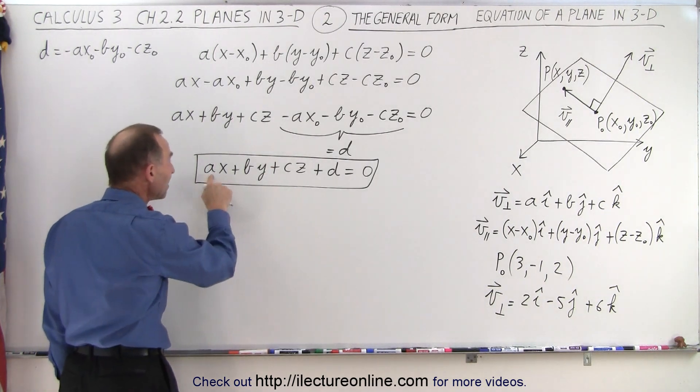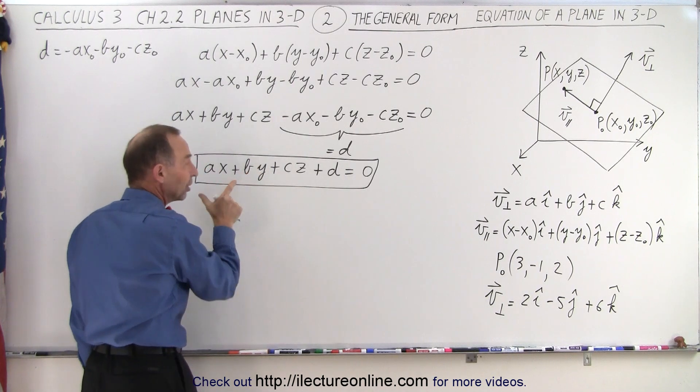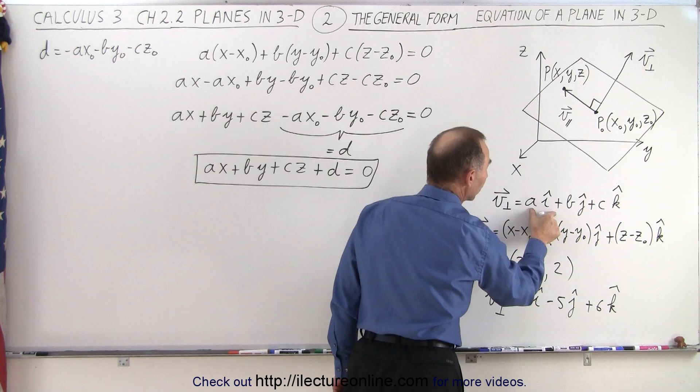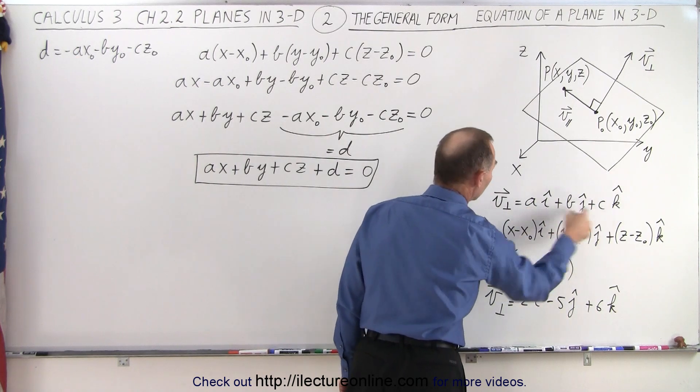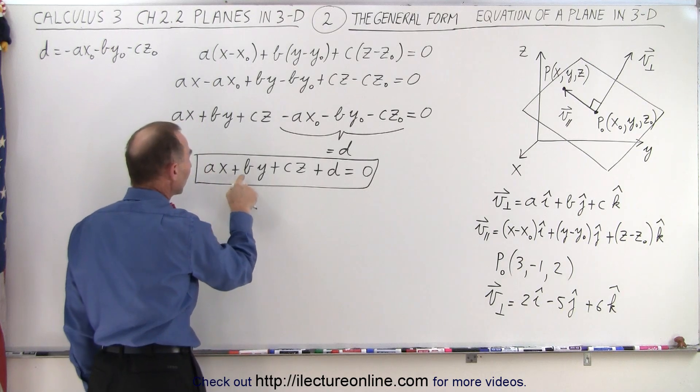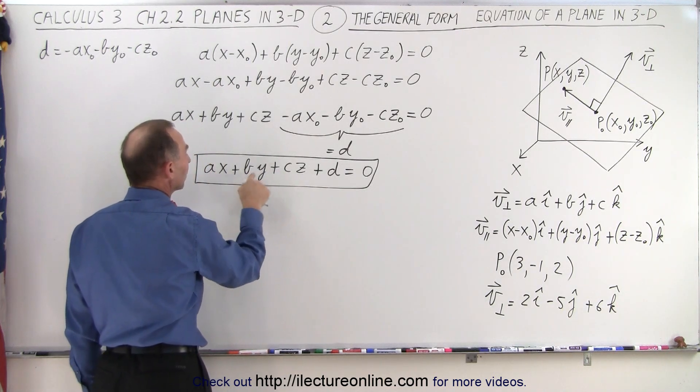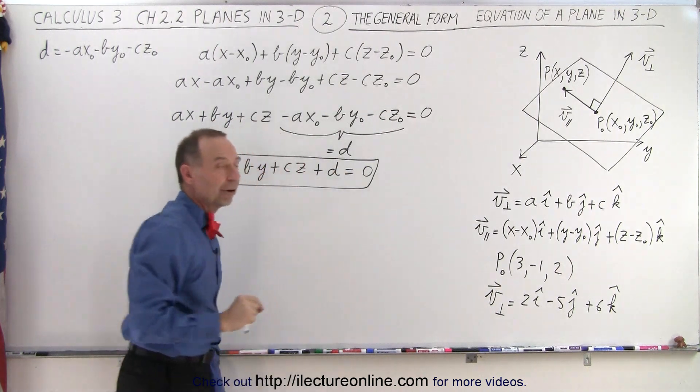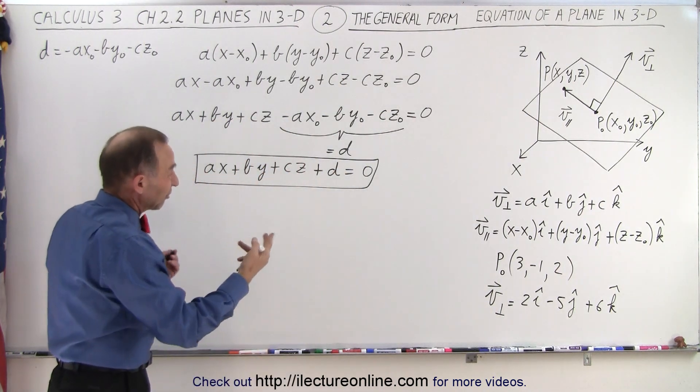Now notice that A, B, and C are still the components of the perpendicular vector. So you can see that this is still related to the vector that's perpendicular, and then we combine those three terms into a single variable called D, or coefficient called D, and that makes up the new equation.